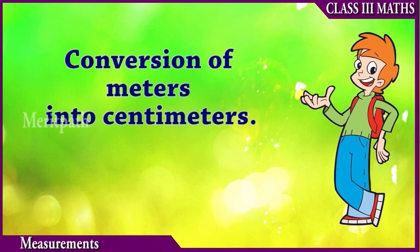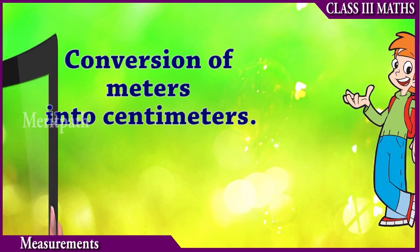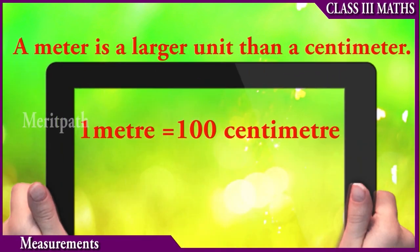Conversion of meters into centimeters. A meter is a larger unit than the centimeter. 1 meter is equal to 100 centimeters.